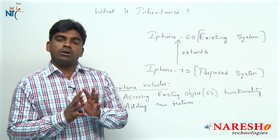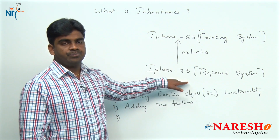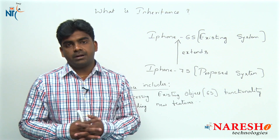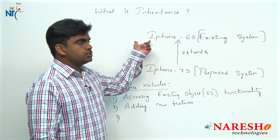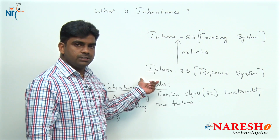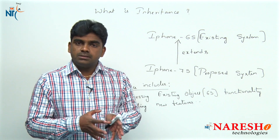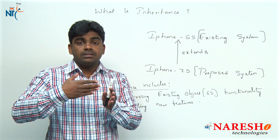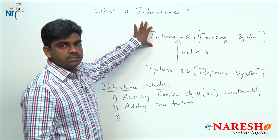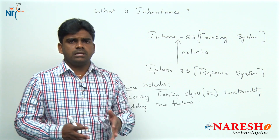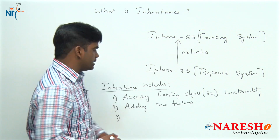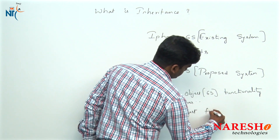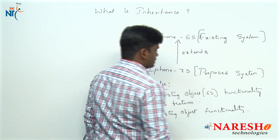The third point: something is already existing in 6s but which is not suitable for 7s, so we should update it. For example, camera — consider it is 12 megapixel in 6s. In iPhone 7s, the name 'camera' stays the same — the identity doesn't change — but the functionality changes from 12 megapixel to 20 megapixel. Similarly, memory size from 2 GB increases to 3 GB or 4 GB. That is what we call updating existing object functionality if required.